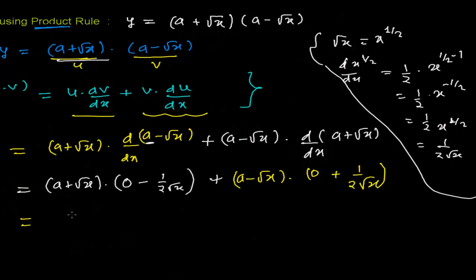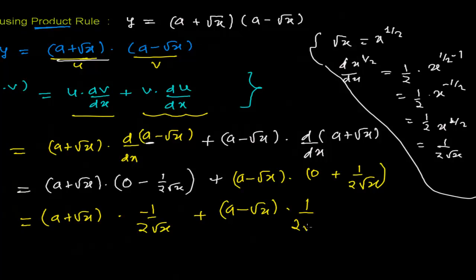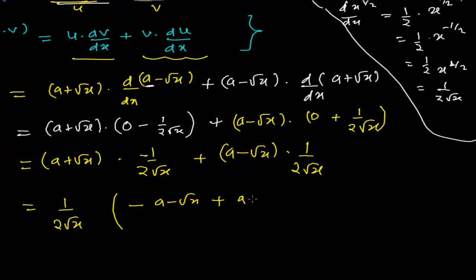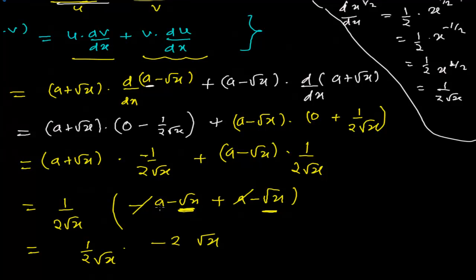So expanding: (a + √x) times (−1/(2√x)) plus (a − √x) times (1/(2√x)). Taking out the common factor 1/(2√x), we get: −(a + √x) + (a − √x). The +a and −a cancel, leaving 1/(2√x) times (−√x − √x) = 1/(2√x) times (−2√x). The 2 and √x cancel, and we are left with −1.